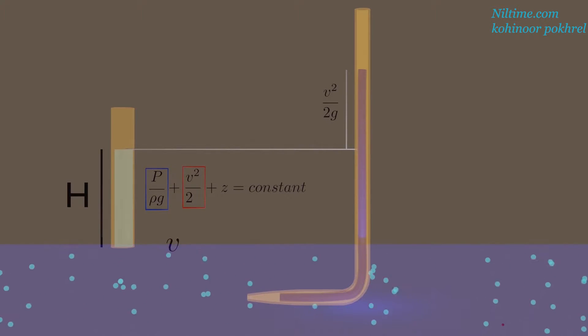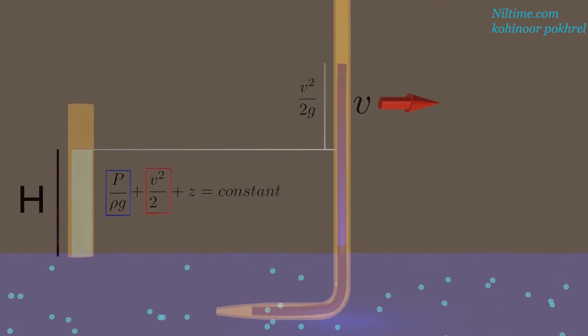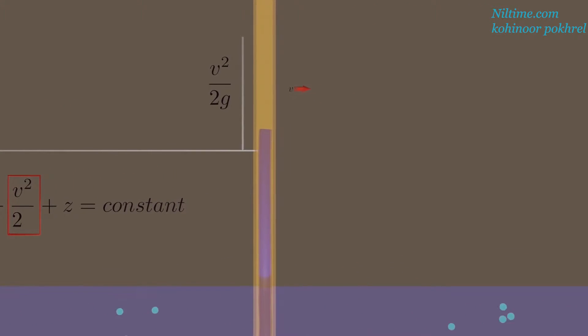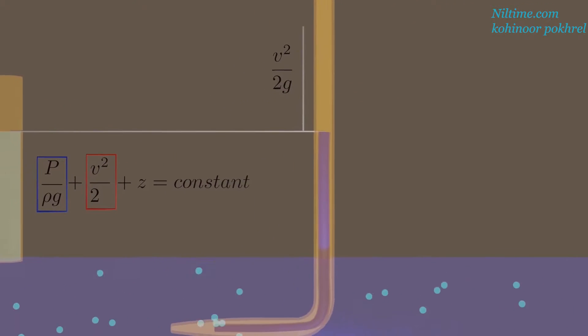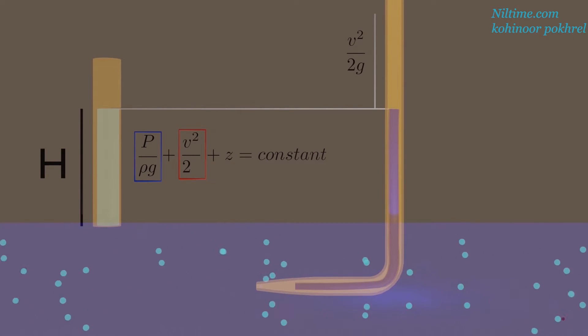Remember, this additional height is related with the velocity of water, and hence we call it velocity head. If flowing water has zero velocity or the water is not moving, then there is only static pressure head.